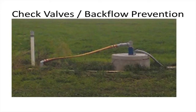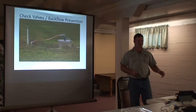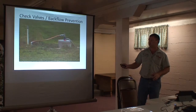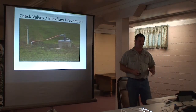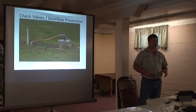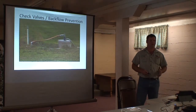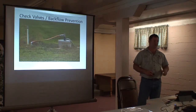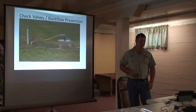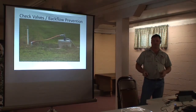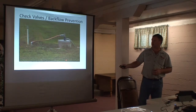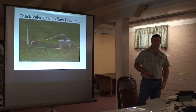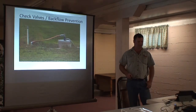Check valves and backflow prevention: when hooking irrigation systems and manure systems together, you can have backflow issues going down the well, so backflow prevention is critical. Chemigation systems actually require a double check valve system with an inspection port to meet the regulation for injecting chemicals into an irrigation system. The foot valve down the side of the well does not count as part of that double check valve system, so you are required to have two backflow prevention devices on this system.